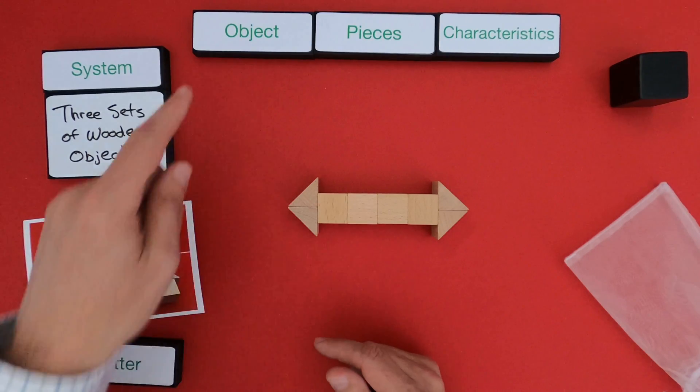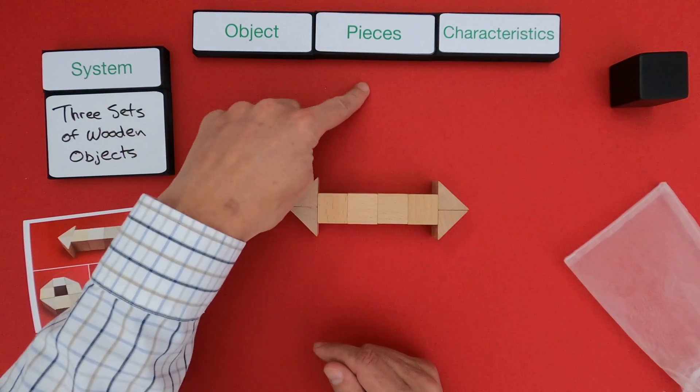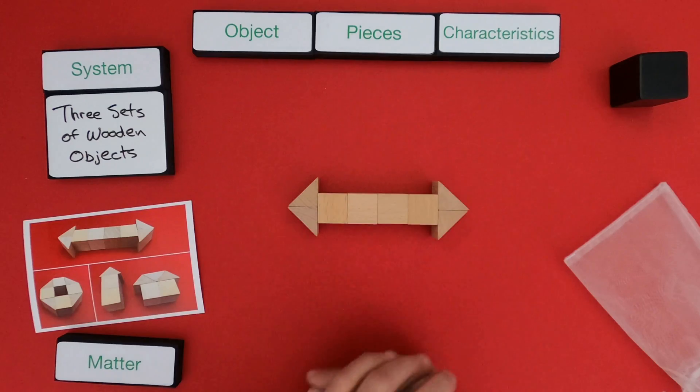I'm going to call this a double arrow. What I'm going to do is go through and write down the name of the object, the pieces in the objects, and then the characteristics of the object.